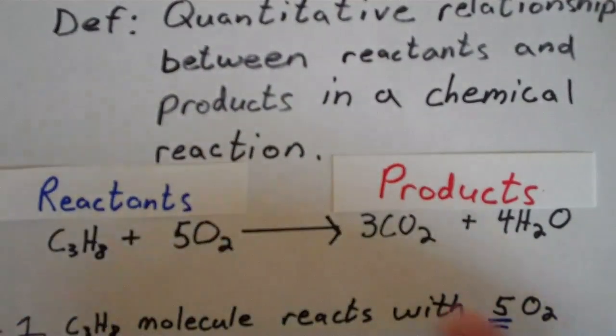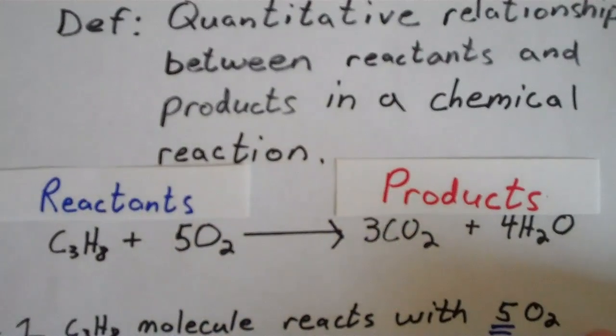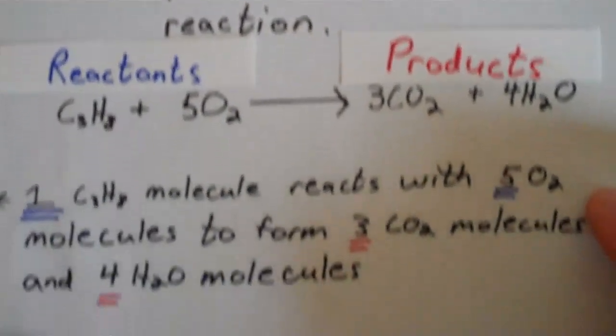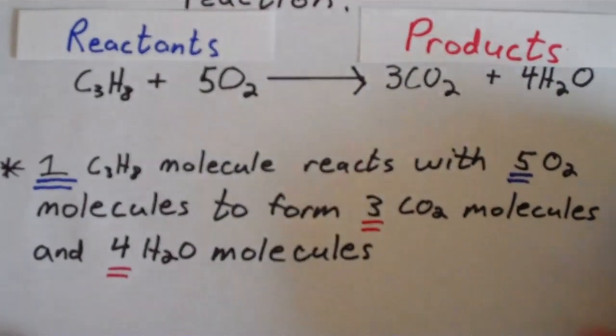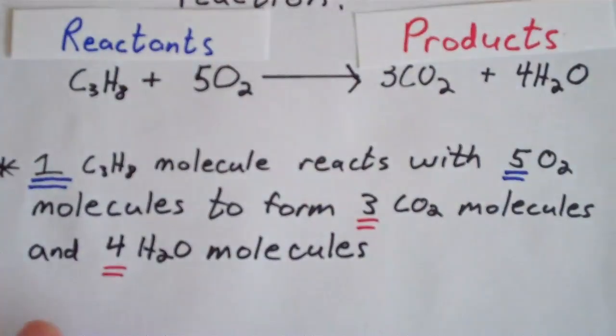So reactants on the left, products on the right. So a verbal description of this reaction might be: 1 C3H8 molecule reacts with 5 O2 molecules to form 3 CO2 molecules and 4 water molecules.